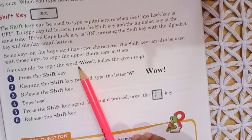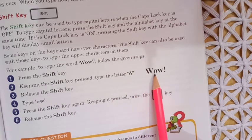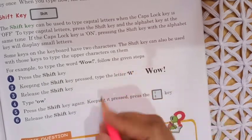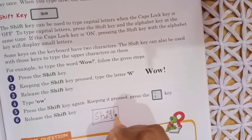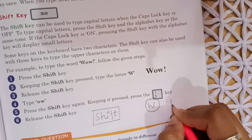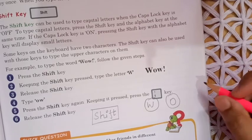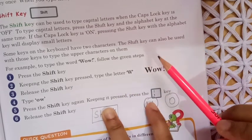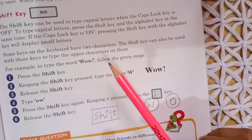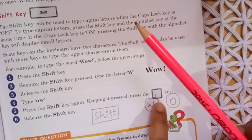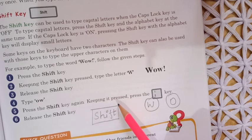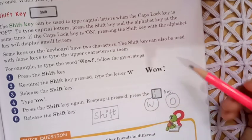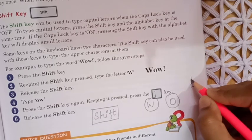For example, to type the word 'WOW': press and hold the shift key, then type the letter W. Release the shift key, then type O and W. Press the shift key again and keep it pressed. For numeric keys that have two functions — for example, key number 1 has an exclamation mark above it.